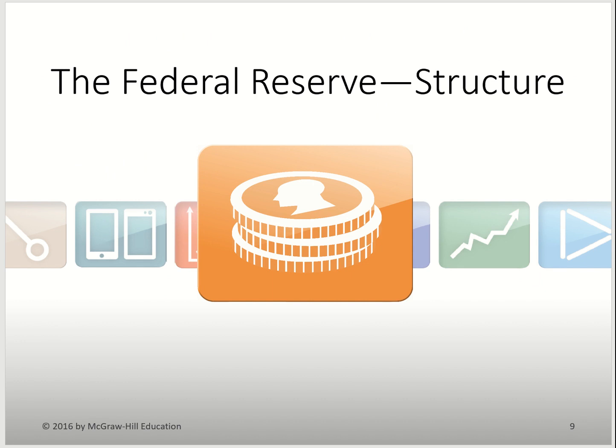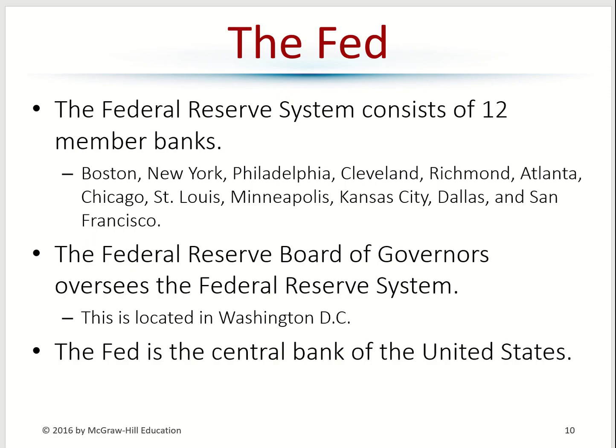Now let's look at the Federal Reserve. Every country has a central bank, and the central bank in America is called the Federal Reserve Bank. The Federal Reserve Bank in America is made up of 12 member banks located in cities such as Boston, New York, Philadelphia, Cleveland, Richmond, Atlanta, and so forth.